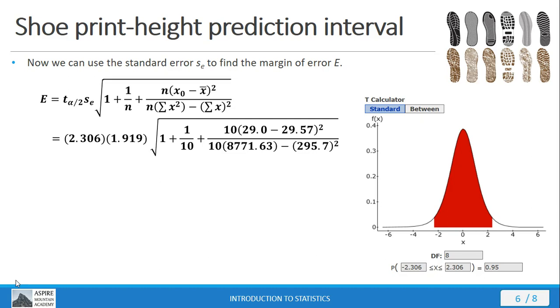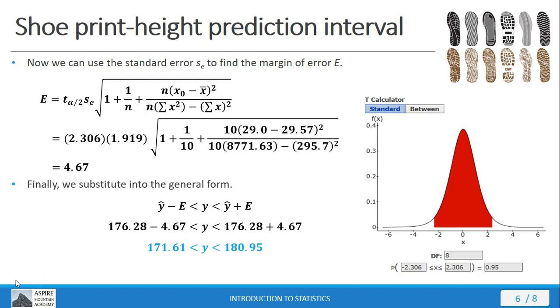Then we plug in all the other values that we get from the data set that we have. X naught, remember, X naught is going to be the value that we're using to make a prediction with, so that's the 29. Then the rest of the values we can actually calculate out by hand using the tabular approach that we saw earlier, and these are the numbers that we plug in. Punch that out all on the calculator, we come out with 4.67 for a margin of error. So now we can substitute into the general form, and when we do that we come out with our prediction interval that you see here.